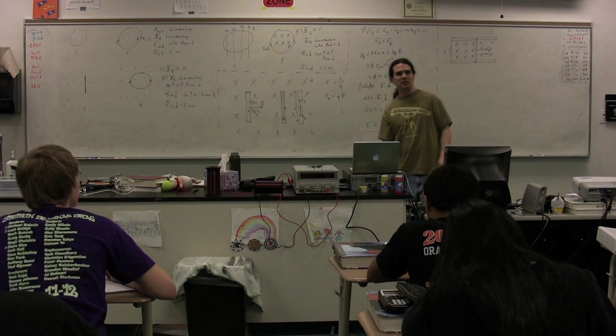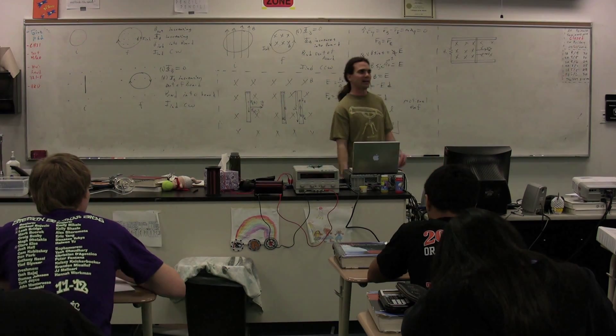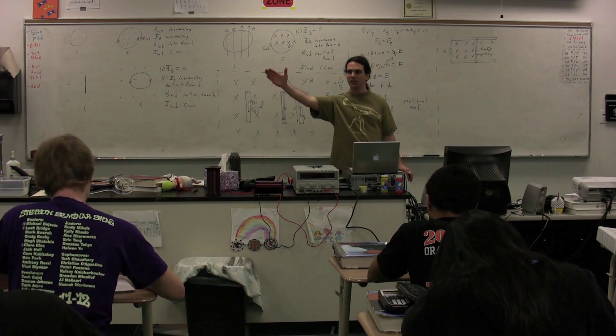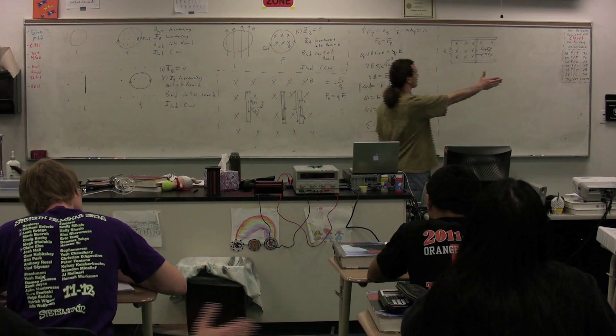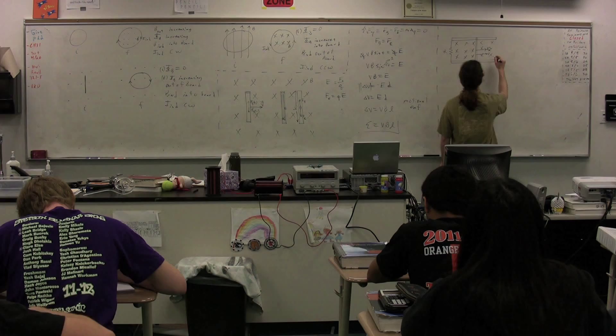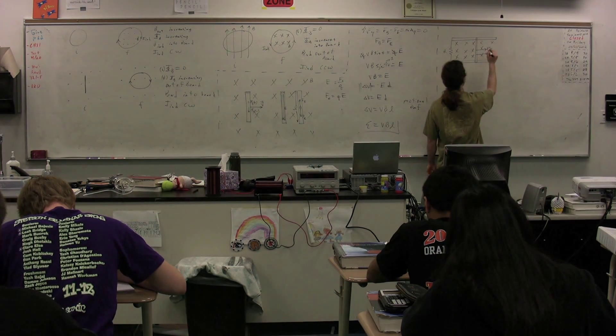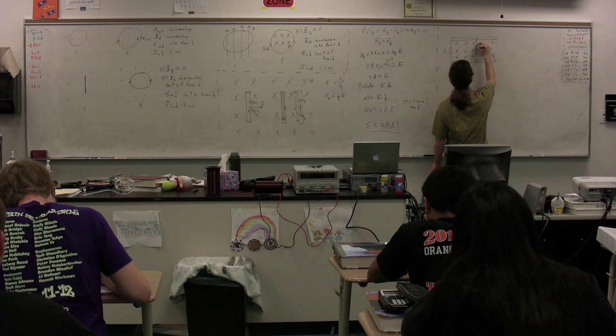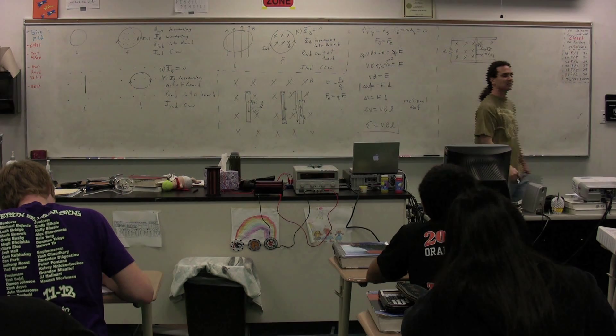All right, this piece of metal has charged objects on it. Take our right hand, we point our fingers in the direction of the velocity, curl our fingers in the direction of the magnetic field, our thumb points up, and that means there is going to be a magnetic force that acts upward on the positive charges.